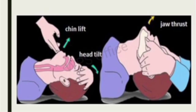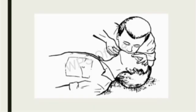In the jaw thrust maneuver, we place one hand on each side of the victim's head, place our fingers under the angles of the victim's lower jaw, and lift with both hands. While giving breathing, we seal our mouth over the victim's mouth and give two breaths, watching for the chest to rise. The chest will rise with each breath. We then listen for air flow from the victim's nose or mouth. The head-tilt chin-lift technique is used to open the unresponsive victim's airway.